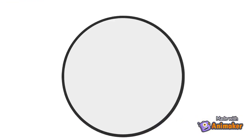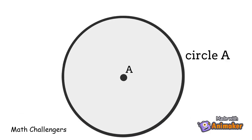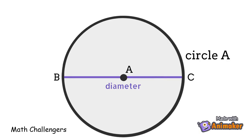A circle can be named by its center. In the given circle, the center is point A, therefore the circle is named as circle A. The distance across a circle through the center is called diameter. A radius is the distance from the center of a circle to any point on the circle. Take note that the radius is half the length of the diameter.